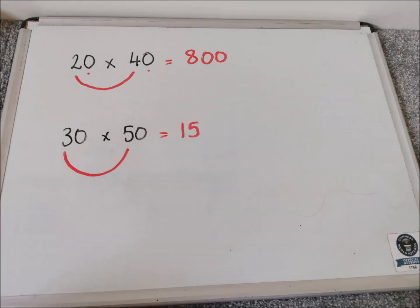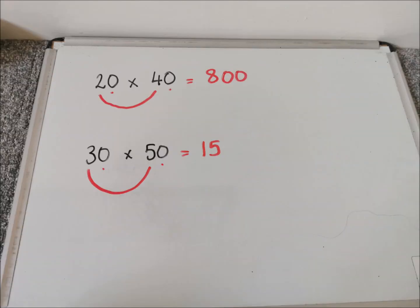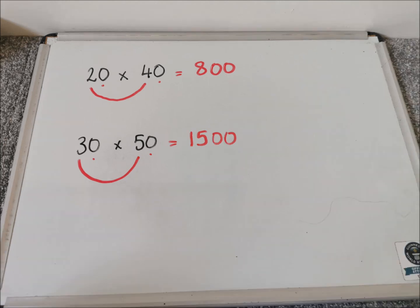I then need to count the number of zeros in the question and put the dots underneath them. So I've got two dots, two zeros. So I add them into my answer. So my answer is 1500.